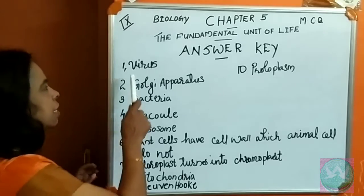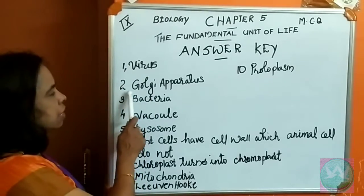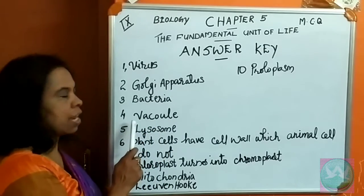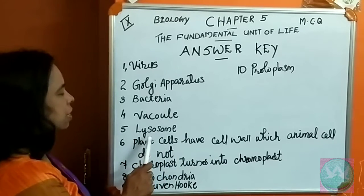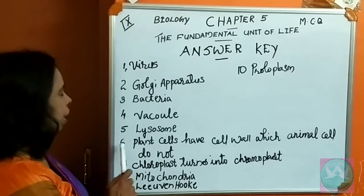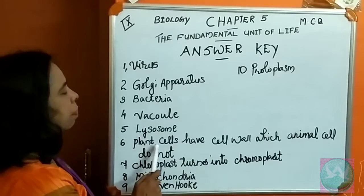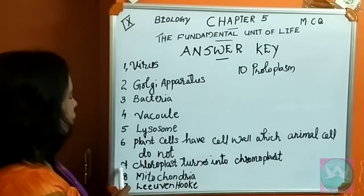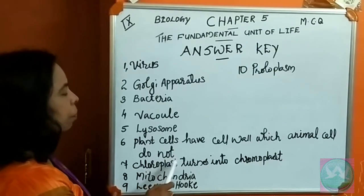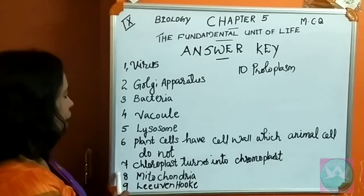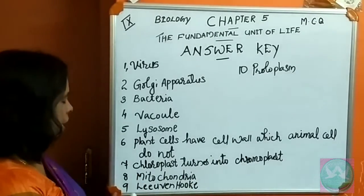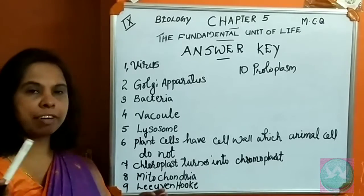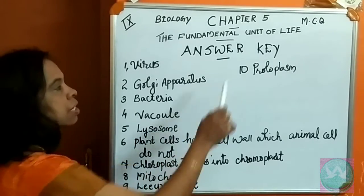First question answer: Virus. Second question answer: Golgi apparatus. Third question answer: Bacteria. Fourth question answer: Vacuole. Fifth question answer: Lysosome. Sixth question answer: Plant cells have cell wall, which animal cells do not. Seventh question answer: Chloroplast turns into chromoplast. Eighth question answer: Mitochondria. Ninth question answer: Leeuwenhoek. Tenth question answer: Protoplasm.